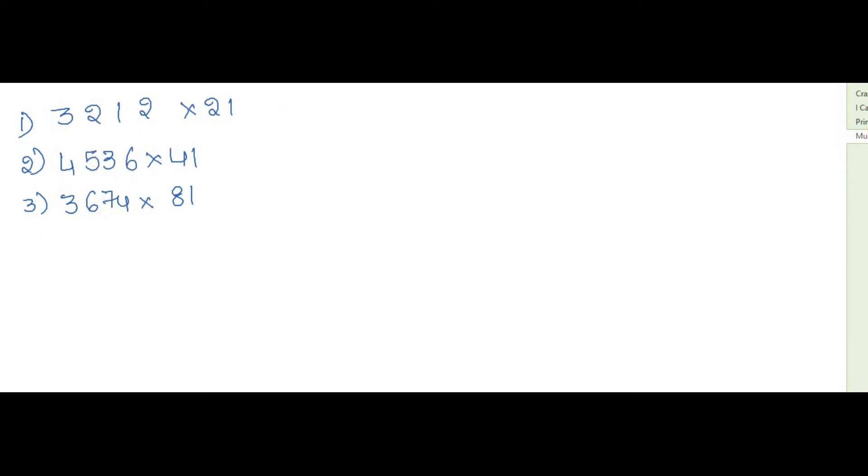We will try to see how we can solve this. Coming to the first question, 3212 multiplied by 21. For this, the simple thing - just write the number as it is and add zero. You have to multiply with two. We all know that two zeros are zero, and you should multiply with this and add the previous number.